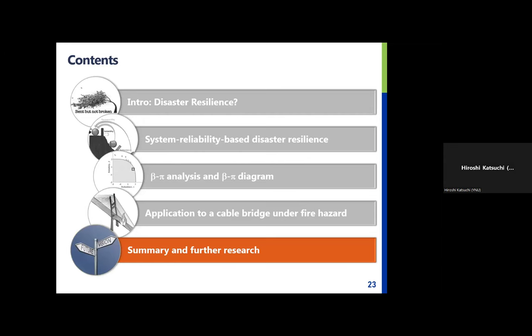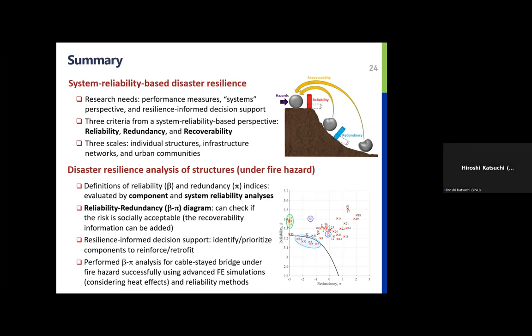To summarize: to understand and evaluate the resilience of our infrastructure system, I proposed a system reliability-based disaster resilience framework highlighted by three criteria — reliability, redundancy, and recoverability. I used the Sohae Grand Bridge example to explain these criteria, then applied the method to a cable bridge under fire hazard. Using the beta-pi diagram, we identified cables showing low resilience for which action is needed. We are now trying to automate this decision-making process by developing an optimization algorithm, and also applying this framework to larger infrastructure networks.